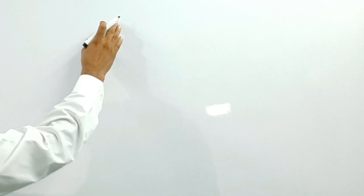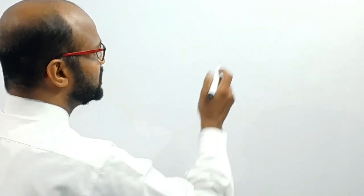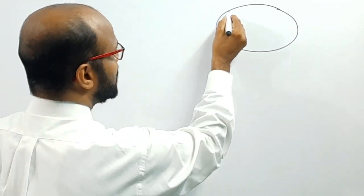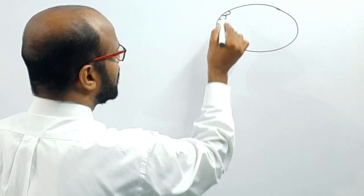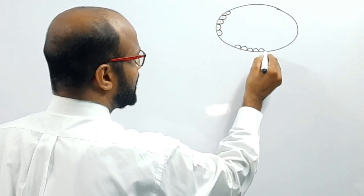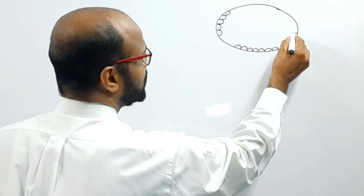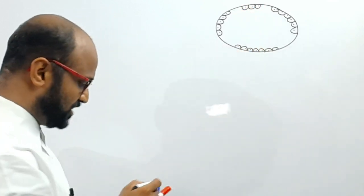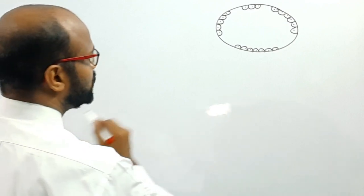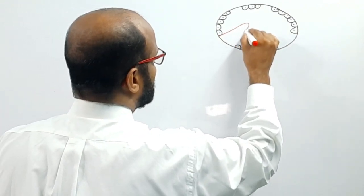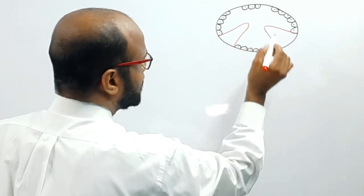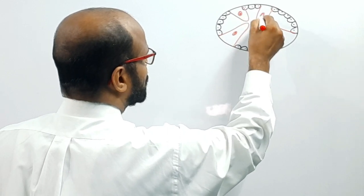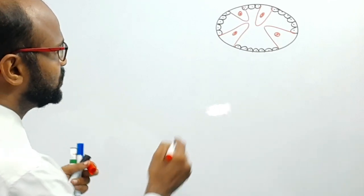As you all know, the structural and functional unit of the testis is the seminiferous tubules. Suppose that this is the cut-open structure of the seminiferous tubules, which is lined by cuboidal germinal epithelium. By the dividing of such cells, sperm are formed, so these are known as spermatogenic cells. Among these cells there are larger-shaped cells, which attach at the base at the basement membrane and extend into the lumen. These larger-shaped cells are known as Sertoli cells or subtentacular cells.